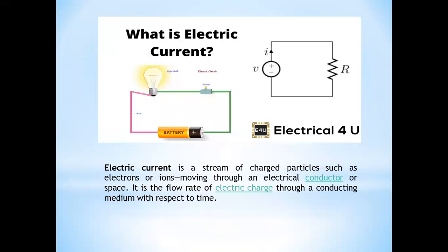What is electric current? Electric current is a stream of charged particles such as electrons or ions moving through an electric conductor or a space. It is the flow of electric charge through a conducting medium with respect to time. Basically, electric current is the flow of electric charges through a conductor or space with respect to time.